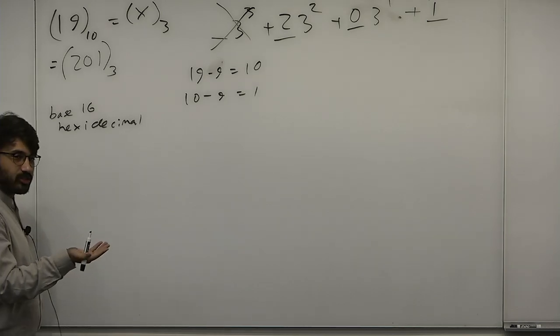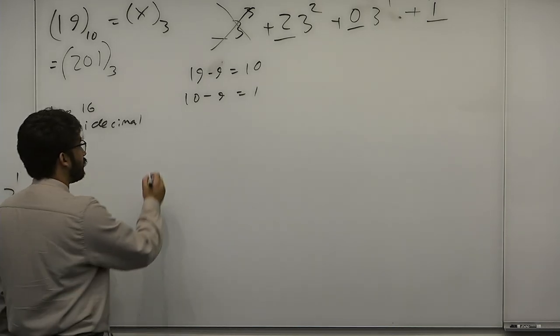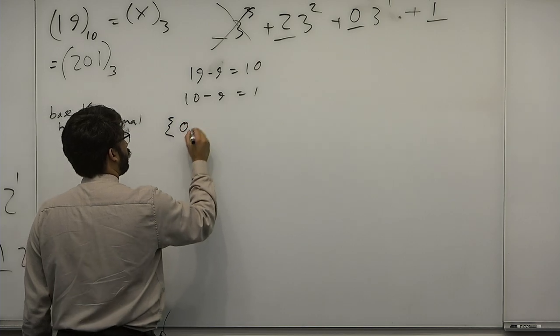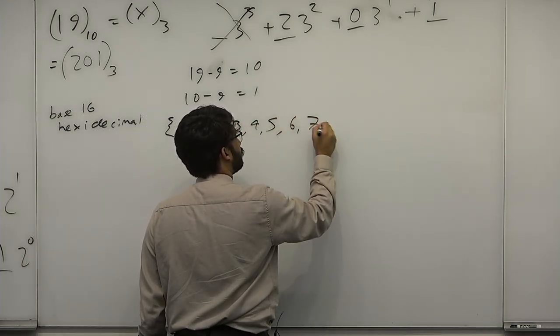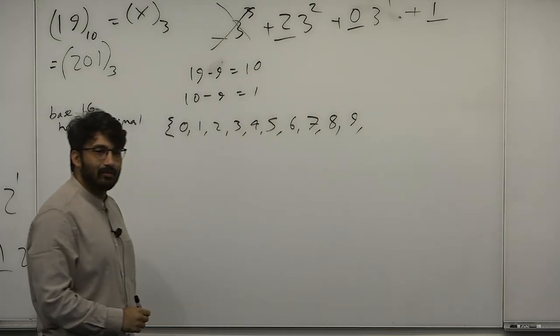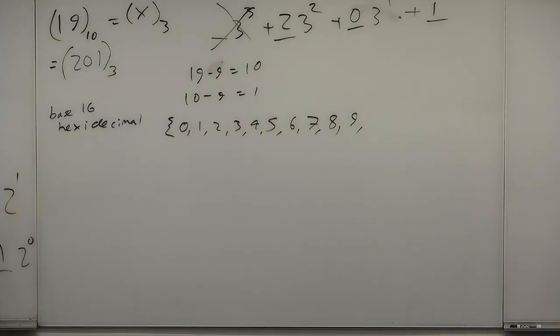This is a pretty popular and common one. But we run out of symbols to do it, right? So you need 15 distinct symbols. You need 16 distinct symbols. You need 0 through 15. So, well, the first 10 symbols we can do easily, right? 0, 1, 2, 3, 4, 5, 6, 7, 8, 9, okay.